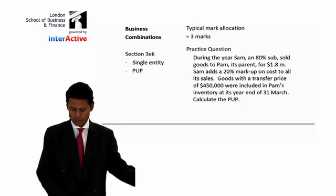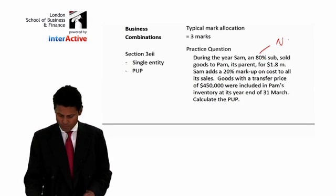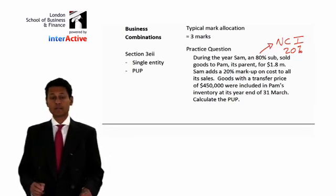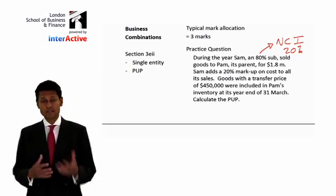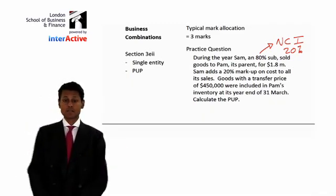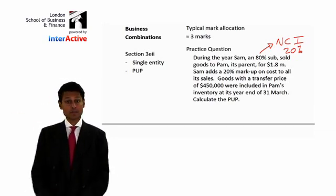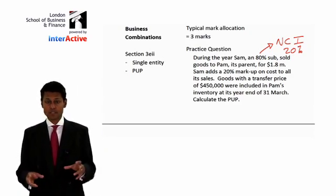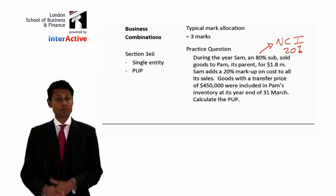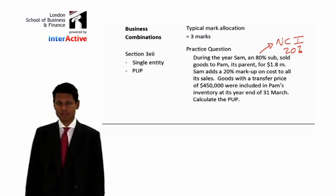During the year, Sam, an 80% subsidiary, sold goods to Pam, its parent, for 1.8 million. By the way, if you have 80%, the people outside — known as the non-controlling interest — must have 20%. So you are the controlling interest, the parent, and outsiders who have 20% are known as the non-controlling interest. The standard that governs this is IFRS 3, also covered by IAS 27. Those two important standards say that if you have more than 50%, you have a subsidiary; the person who owns more than 50% is the controlling interest, and outsiders are the non-controlling interest, also known as minority interest.